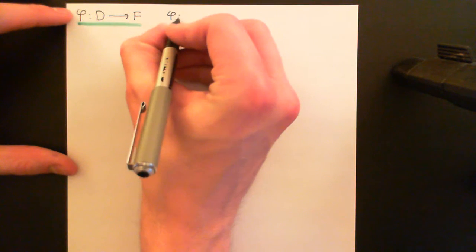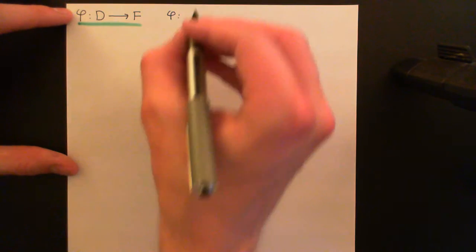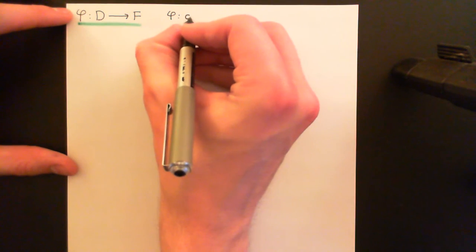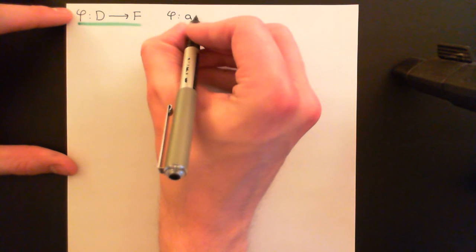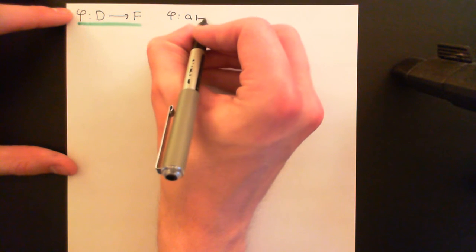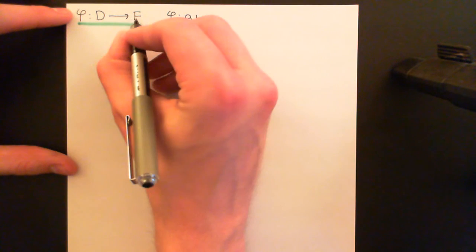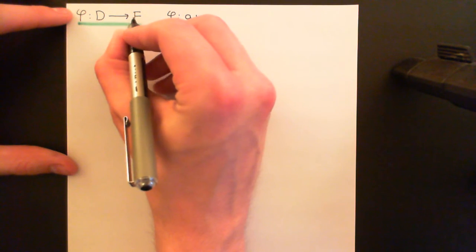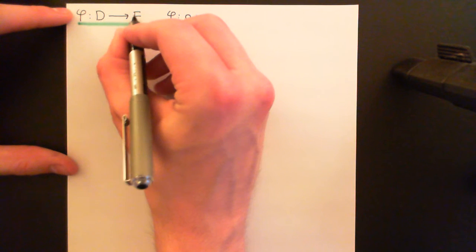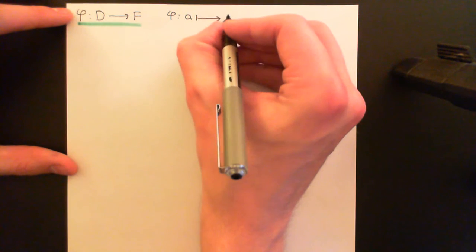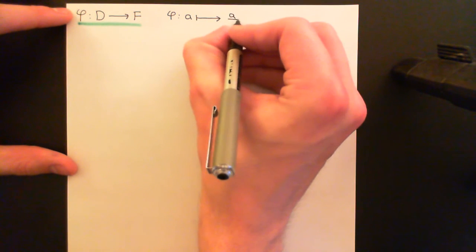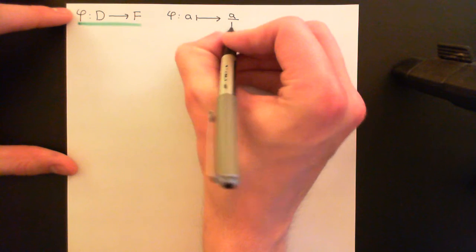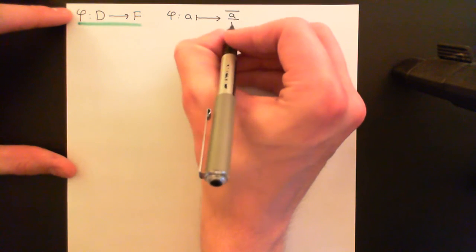So I'm going to tell you what this ring homomorphism is actually going to do. It's going to take any element A in the integral domain and map it onto the equivalence class of fractions that contains the fraction A over 1.